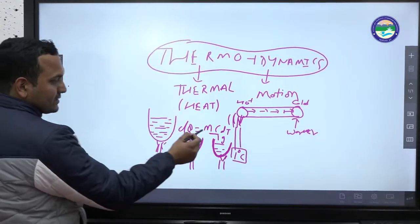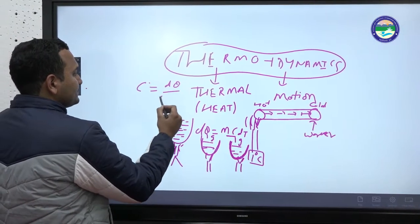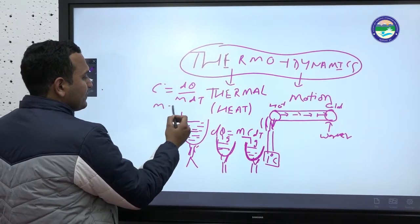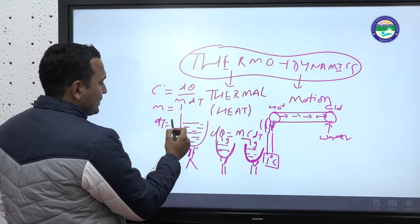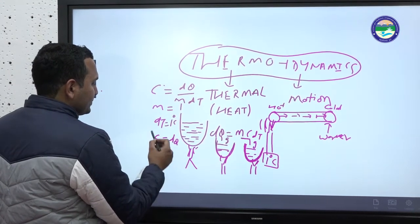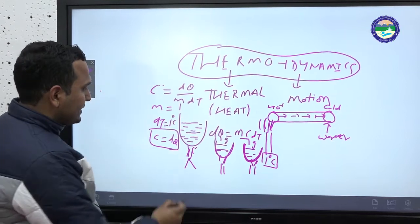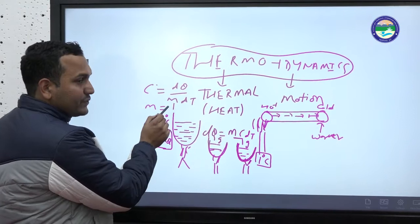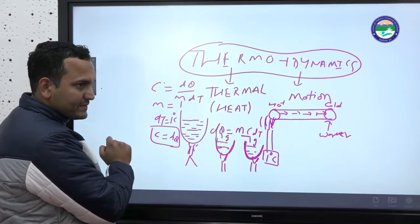We define specific heat as: C = dQ / (m · dT). By definition, if m = 1 and dT = 1 degree centigrade, then C = dQ. So specific heat is the amount of heat required to raise the temperature of a unit mass by 1 degree centigrade.